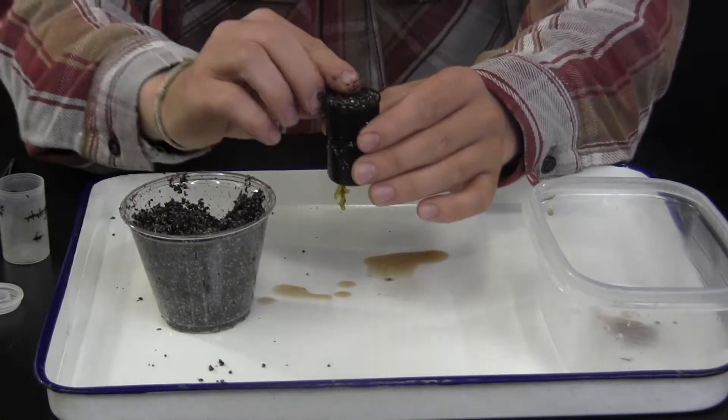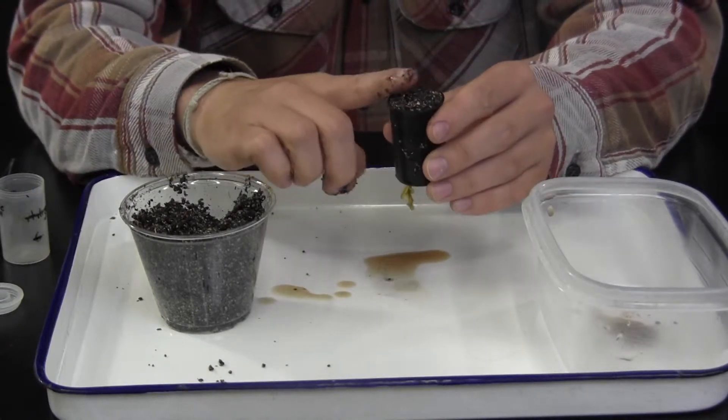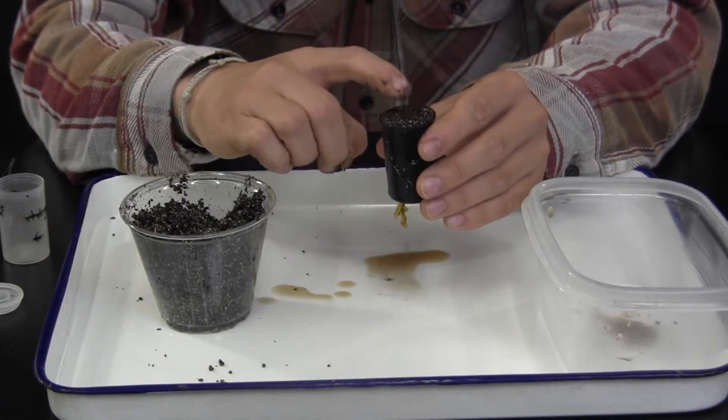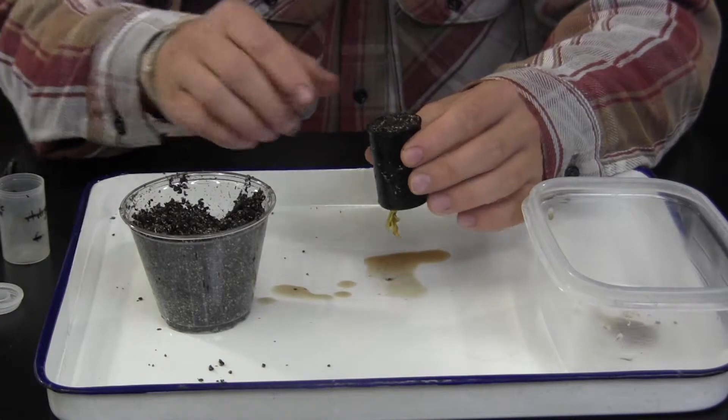Now, create a shallow depression by lightly pressing a finger into the potting mix. Add four seeds of Rapid Cycling Brassica Rapa.